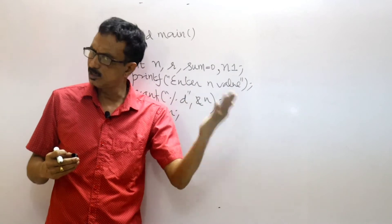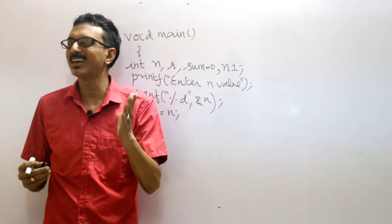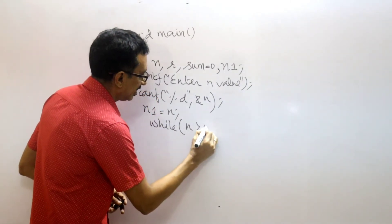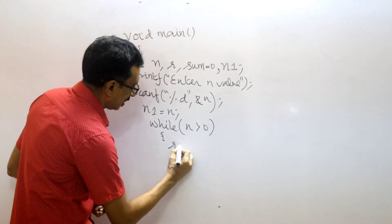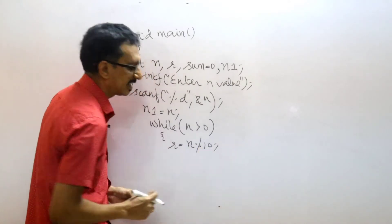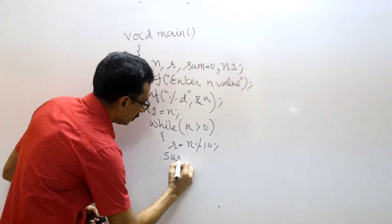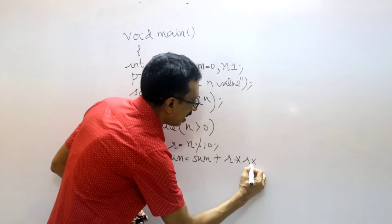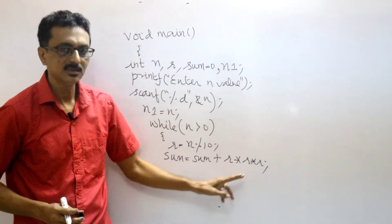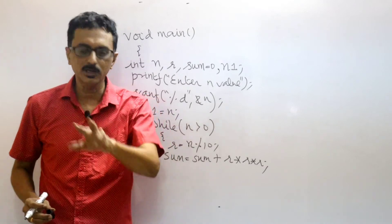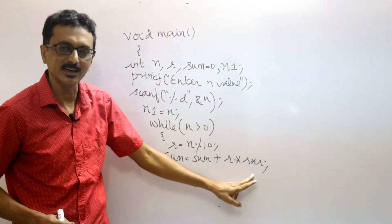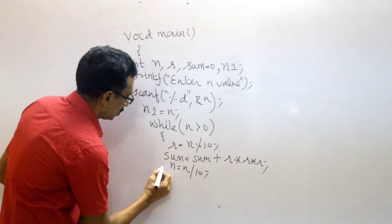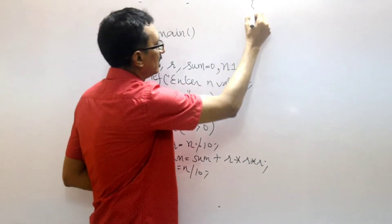While loop: condition n greater than zero. Inside the loop, r is equal to n modulus 10 — this extracts the last digit. Then sum is equal to sum plus r into r into r — that is the cube of r. For a square it is a into a; for a cube it is a into a into a. Then n is equal to n divided by 10 to remove the last digit. Close the while loop.